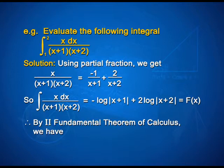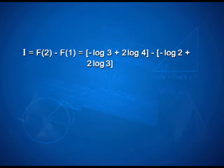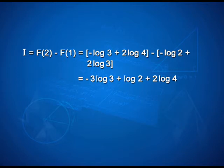Therefore, by the second fundamental theorem of calculus, the integral equals F(2) − F(1) = (−log 3 + 2 log 4) − (−log 2 + 2 log 3) = −3 log 3 + log 2 + 2 log 4. On solving, we get log(32/27).